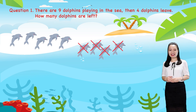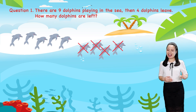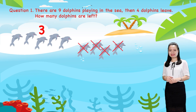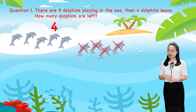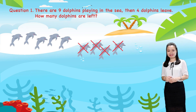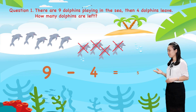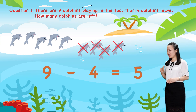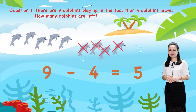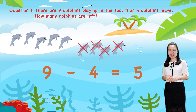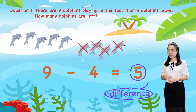Let's find the answer together. Let's count. One, two, three, four, five. So, five dolphins are left. We write in numerals. We say, nine minus four equals five. Here, five is the difference.